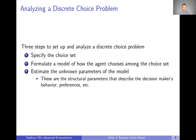To analyze a discrete choice problem there are essentially three steps. First, we need to specify a choice set — the things the decision maker is choosing across. Second, we need to formulate a model of how the agent chooses among the choice set. Third, we need to estimate the unknown parameters of that model. Going back to structural estimation, these are going to be structural parameters that describe some invariant underlying characteristic of the decision makers — something about their preferences, behavior, risk attitudes, or if we're talking about firms, something about marginal costs or how they value different inputs or outputs.